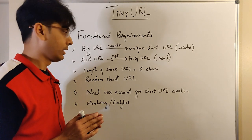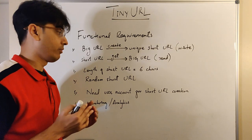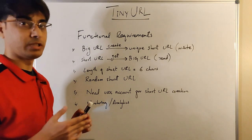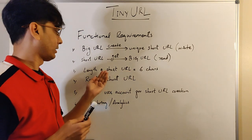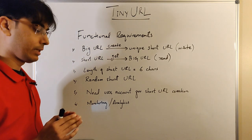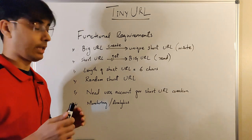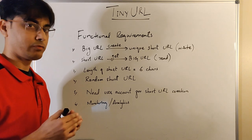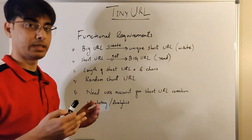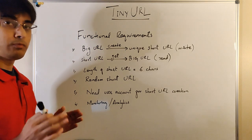We will limit the maximum length of the short URL to six characters and see how many different short URLs we can create. If in future we exhaust our limit, we can always increase the length to seven, eight, or more characters. The fourth requirement is that we would like to generate short URLs in a somewhat random manner, although it's not a hard requirement. Let me know in the comments below why it would be bad if a user can guess the next generated short URL.